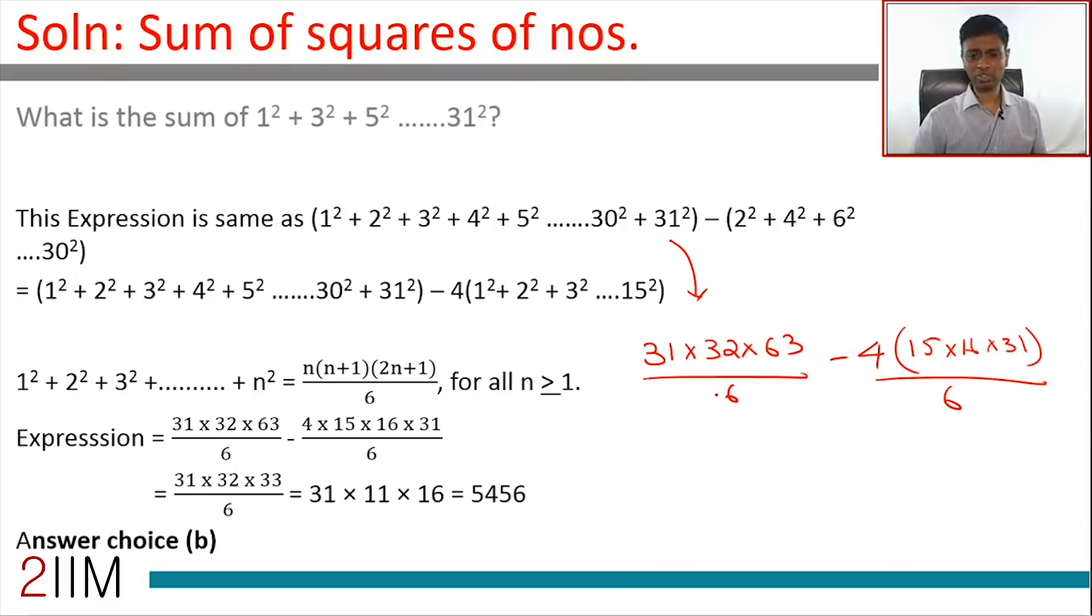31/6 outside, then there's a 32 also which you can take out. Into 32, the first term is 63. 31/6 × 32: the first term is 63, second one minus 4 × 16—I'm taking out 32 so 2 × 16 is out, 2 × 15 is left.